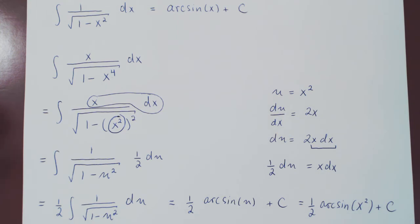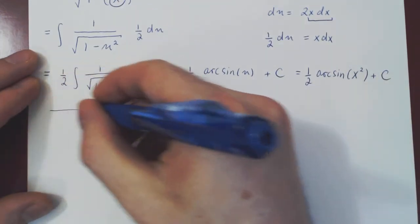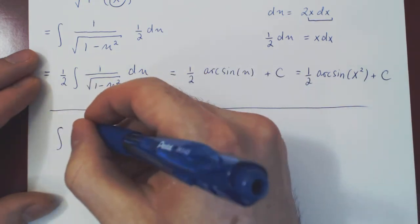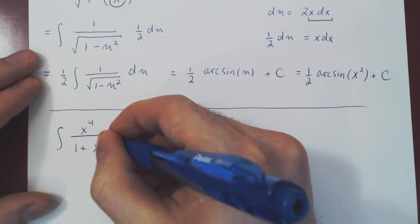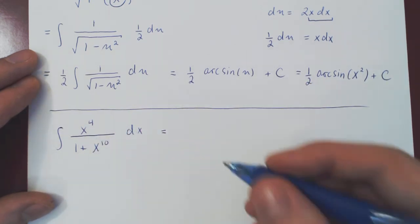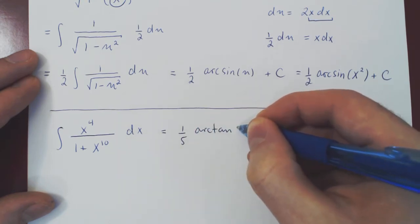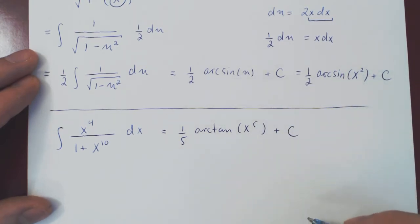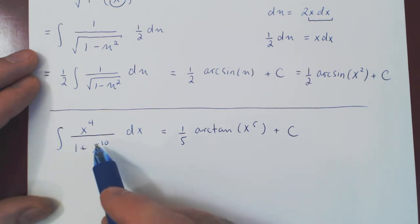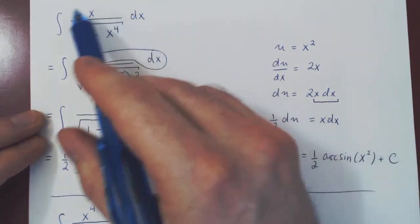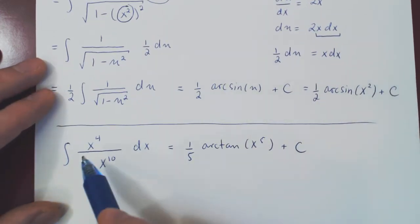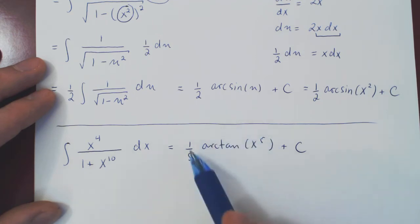I'll leave you with another example. And this will be as an exercise. Try and show, try and come up with a way to pull out a u-substitution to show that if you integrate x to the 4 over 1 plus x to the 10 dx, that this will turn out to be 1 over 5 the arctangent of x to the 5 plus C. So same thing here. If you look at your denominator, the derivative would be 10x to the 9. x to the 9 is not multiplying the expression, so it looks like a u-sub will not work. But just as a u-sub was hiding in this problem, a different u-sub is also hiding in this one. So try and come up with it and arrive at this answer.